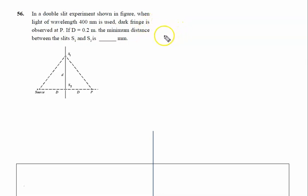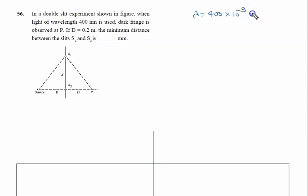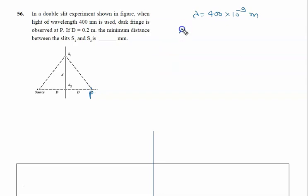In a double slit experiment shown in the figure, light of wavelength 400 nanometers (λ = 400 × 10⁻⁹ m) is used. A dark fringe is observed at point P. For a dark fringe, the path difference is given by (2n − 1)λ/2.